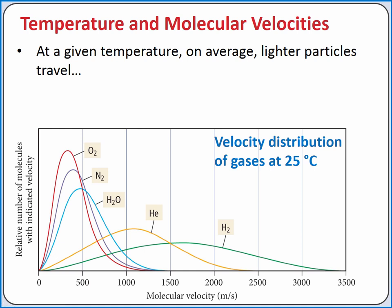According to kinetic molecular theory, the average kinetic energy of a gas is directly proportional to the temperature in Kelvin. If we have a mixture of gases with different molar masses at a given temperature, for the average kinetic energy of each gas to be the same, lighter gas particles will travel faster on average.